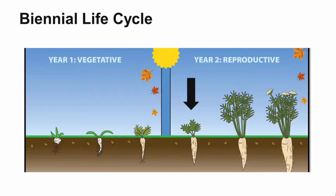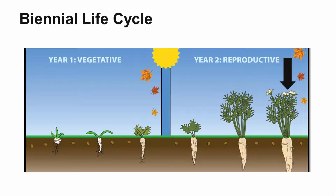The second year of the biannual is really the reproductive year, versus year one which was mainly vegetative. The plant grows, gearing up to produce seed — you get much higher growth, it shoots up, flowers, and seeds at the end of year two. After it has produced seed, the two-year life cycle is over and it's going to die. Regardless of weather conditions, it only lives two years. But it has produced lots of seeds that create a seed bank in the soil.